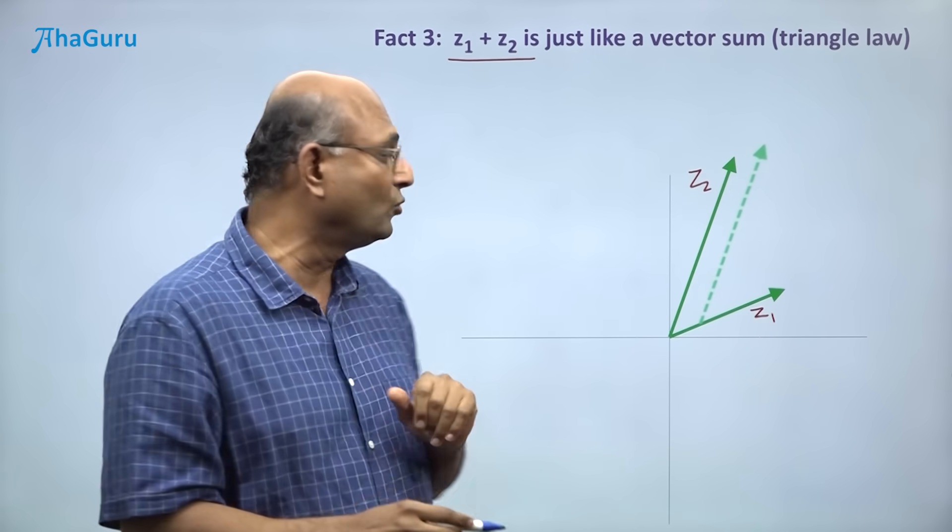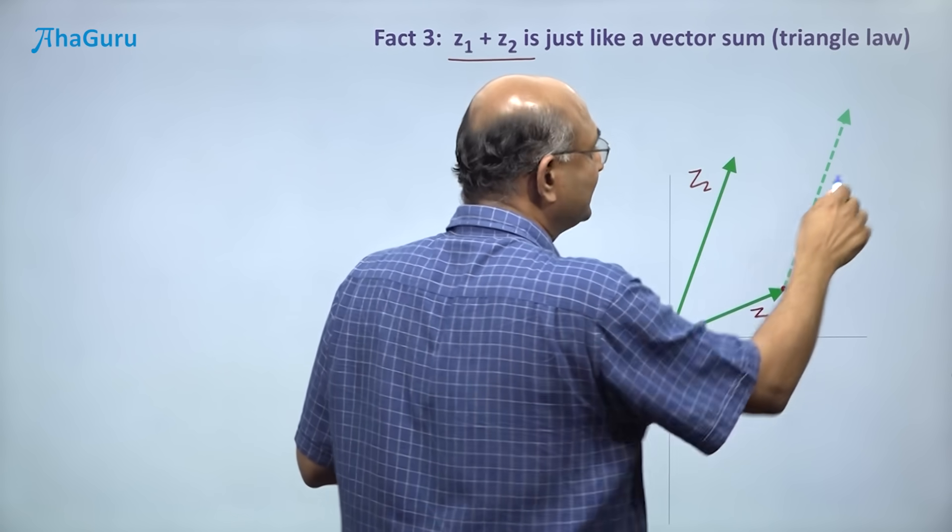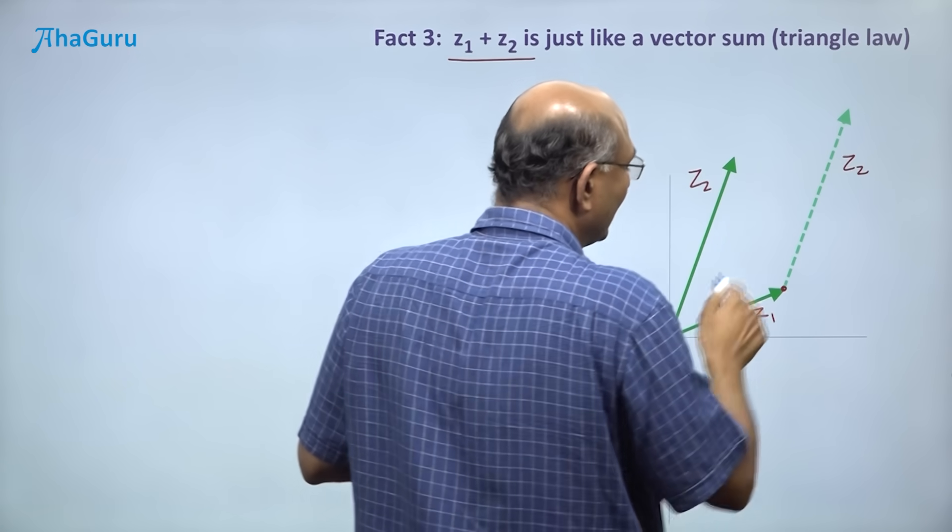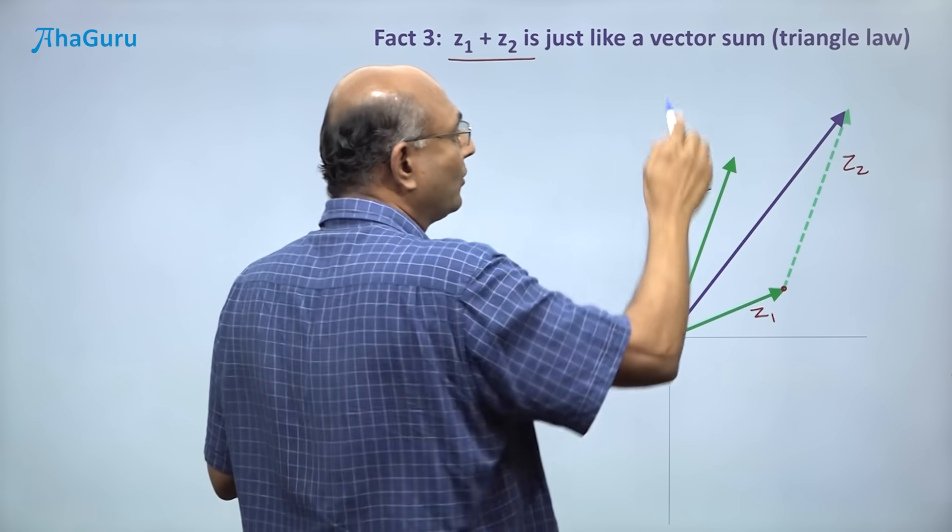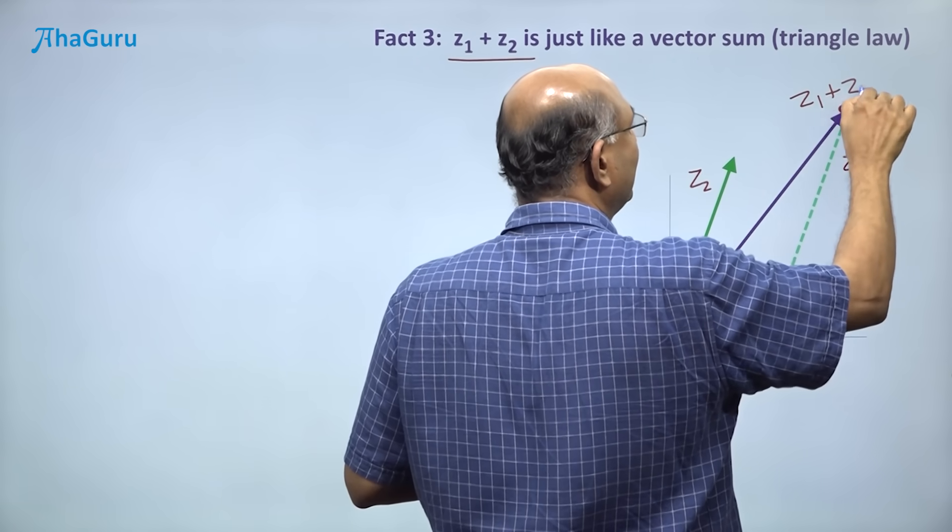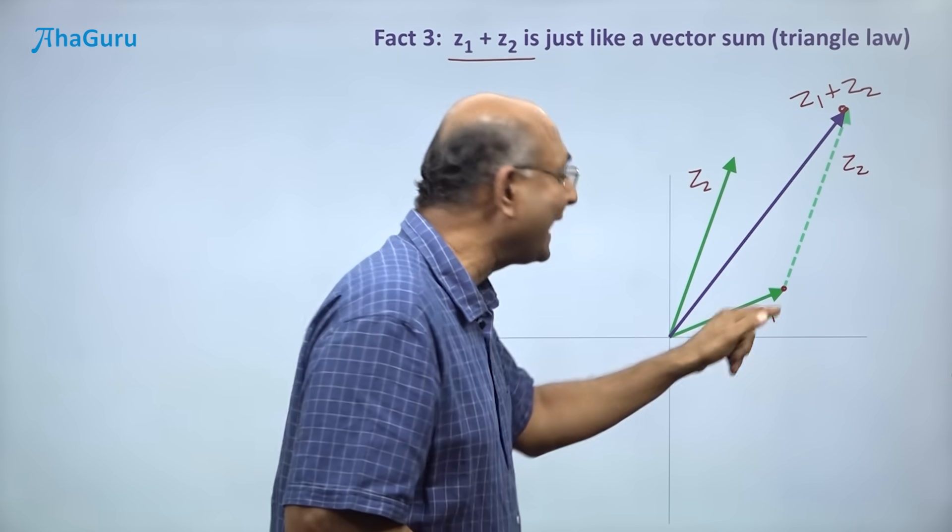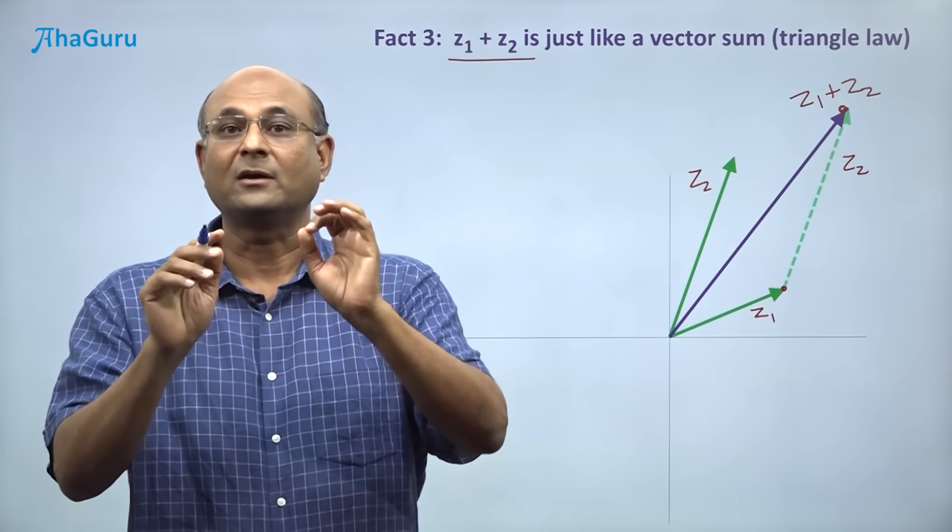So if I talk about one complex number z1 here, this one, and another complex number z2, and I want to do z1 plus z2, move z2 such that you get the tail of z2 to the head of z1. So this is z2. Z1 plus z2 is this arrow. So this point here is z1 plus z2. Shift z2 and add it like usually you add with vectors.